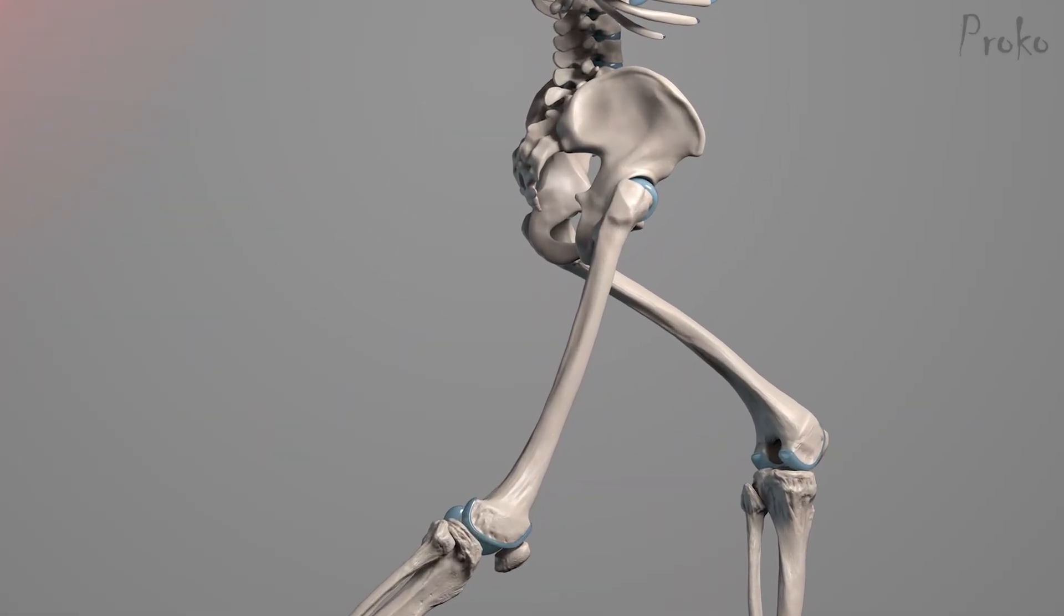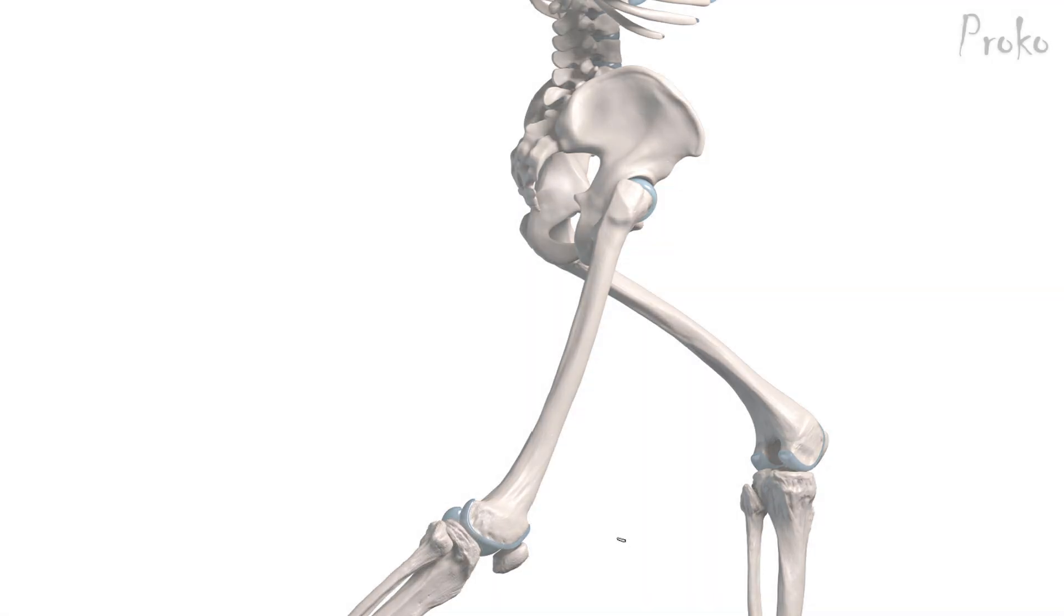Alright guys, welcome to the third example. I'm going to show you how to do this leg extending backward. As always, I'm going to start with the cylinder of the leg so that I can imagine the glutes reacting to the form of the leg muscles as well. It'll help me.